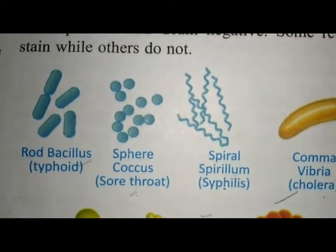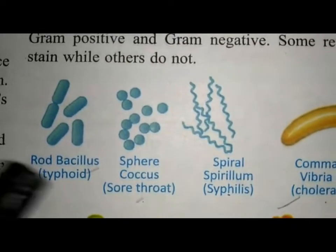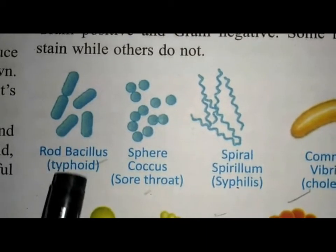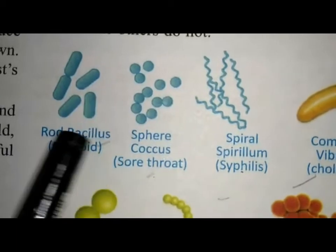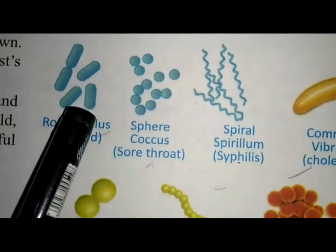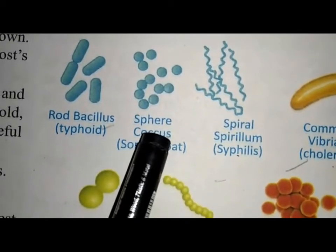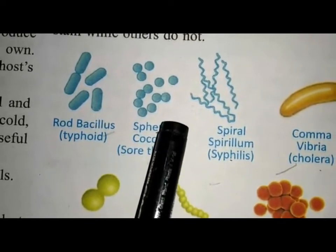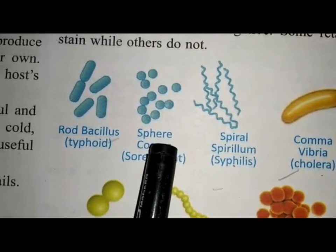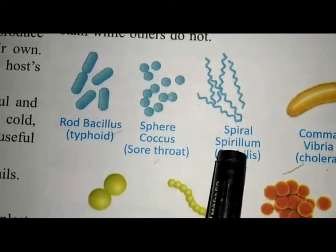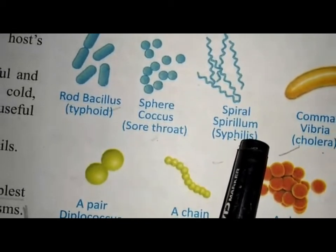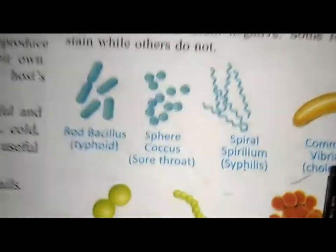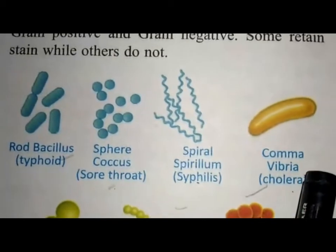Bacteria occur in four main shapes in our environment. First is rod-shaped bacteria, called bacilli or bacillus — for example, Lactobacillus. Second is spherical-shaped bacteria, called coccus — for example, Streptococcus. Third is spiral-shaped, called spirillum. And last is comma-shaped, called Vibrio — for example, Treponema.